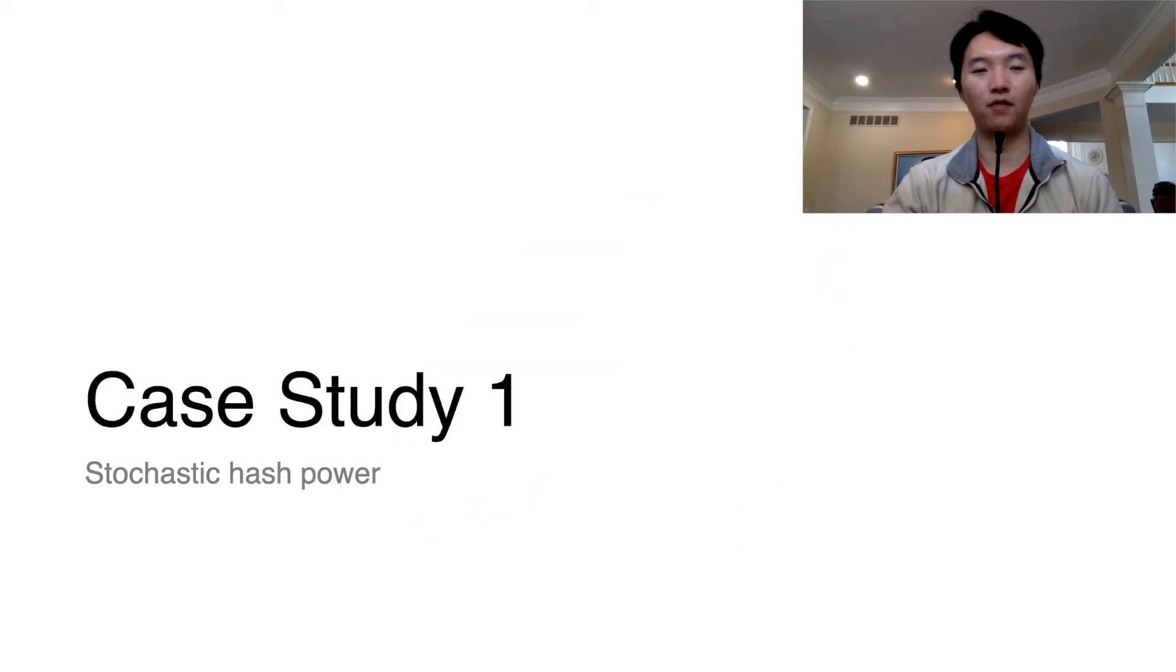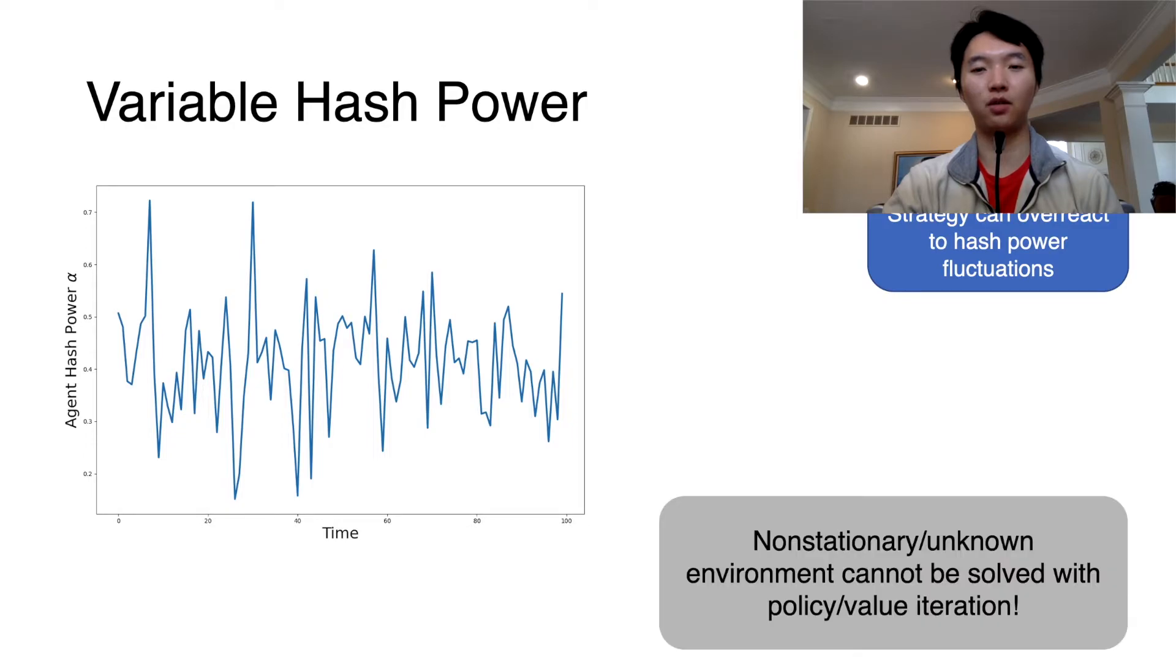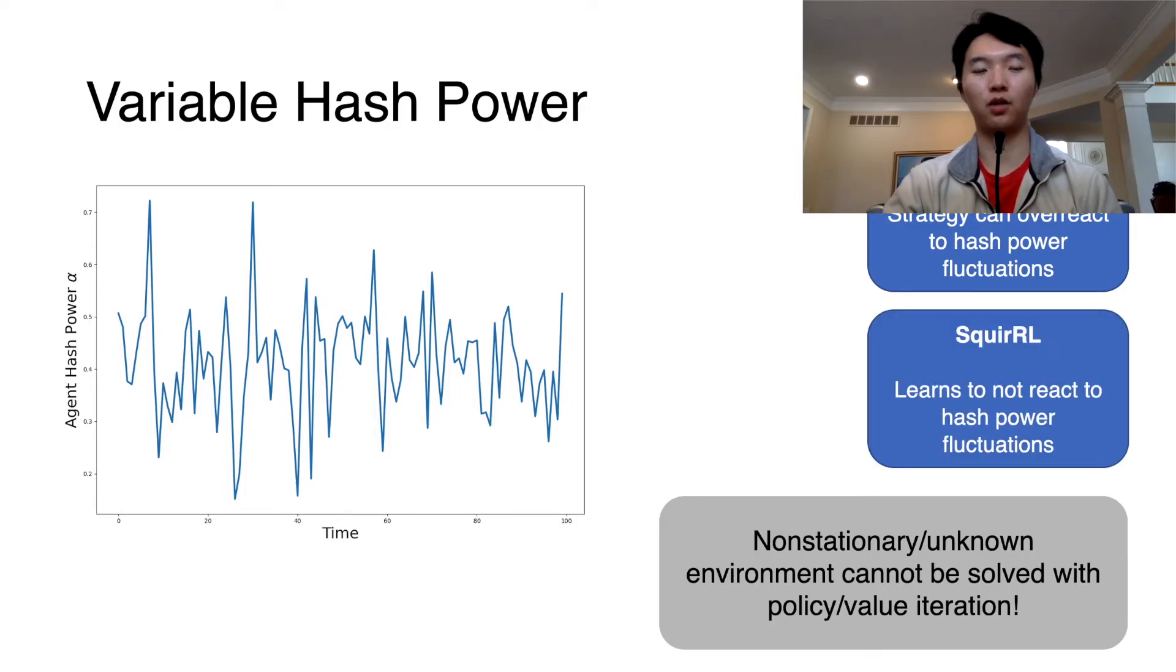Now we present our first case study. Here, we study the case where a miner's hash power fluctuates randomly, in a way that is unknown to the agent. This cannot be solved optimally using policy or value iteration, because the environment is unknown. In this case, policy iteration strategy can overreact to hash power fluctuations, but Squirrel learns to not react.